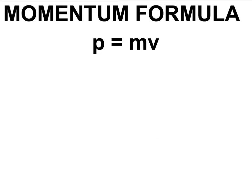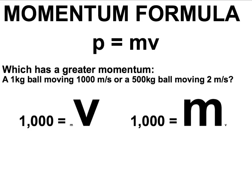I want to start this video by looking at number four of our bellwork, which asked: which has more momentum — a one-kilogram ball moving at 1,000 meters per second, or a 500-kilogram ball moving at 2 meters per second? To analyze that question, we need to remember our formula for momentum. The answer was they have equal momentum.